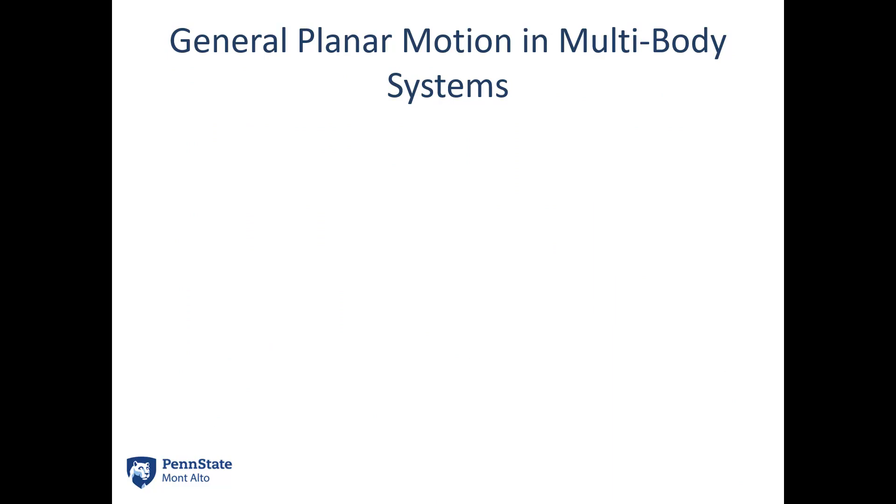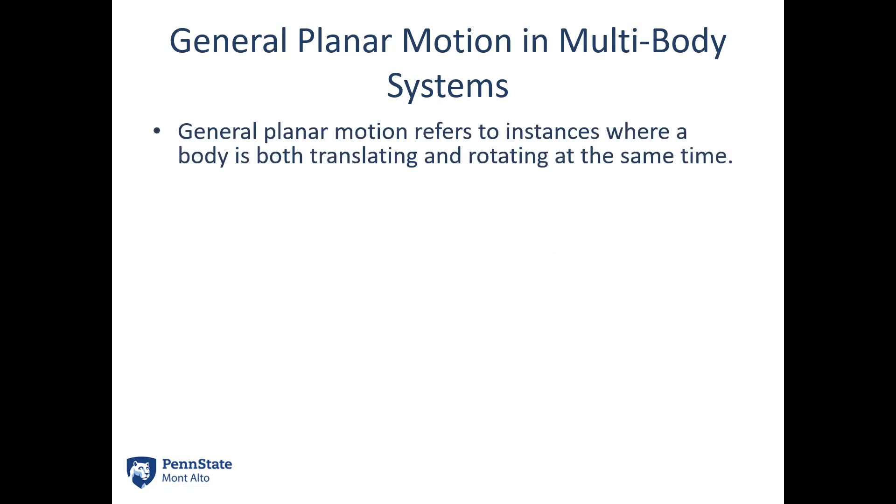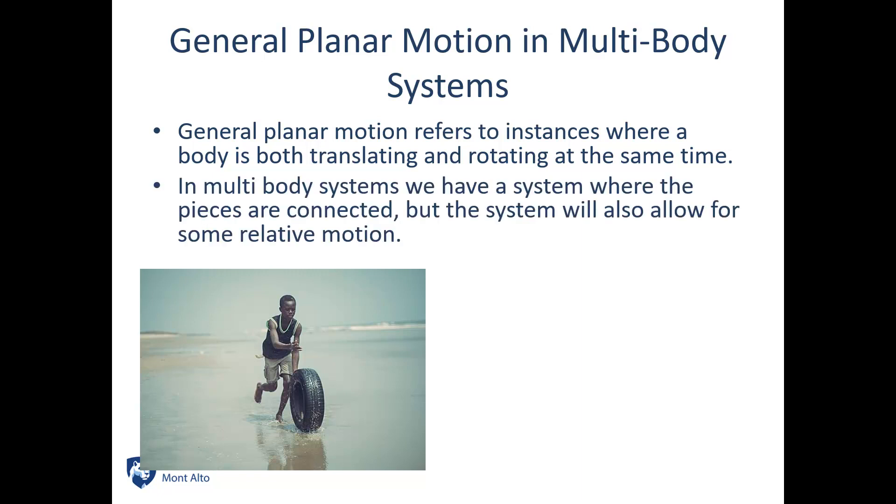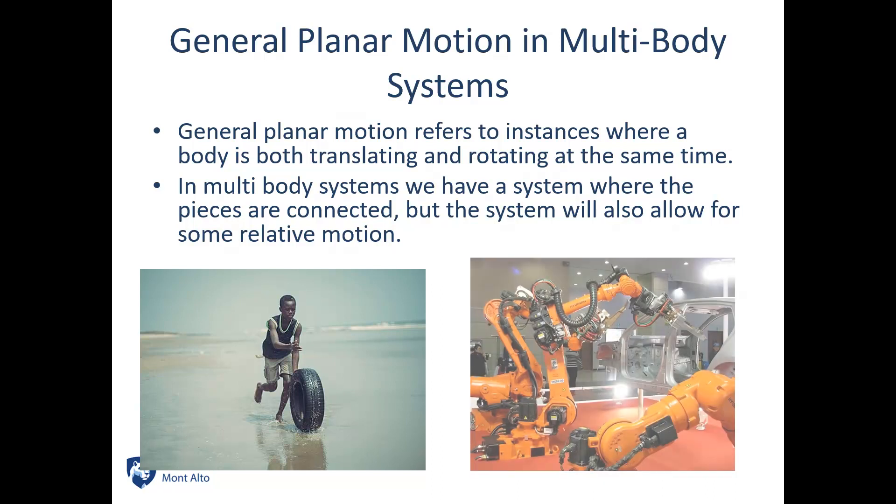So general planar motion and multi-body systems. General planar motion again refers to instances where a body is both translating and rotating at the same time. The example we used in the previous section was a tire rolling along the ground. In multi-body systems we have different connected pieces that are related to one another but we have independent motion of the various pieces.